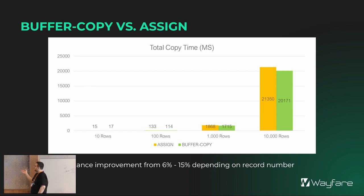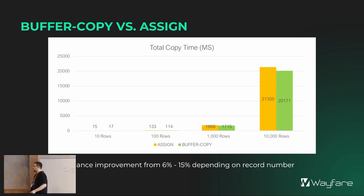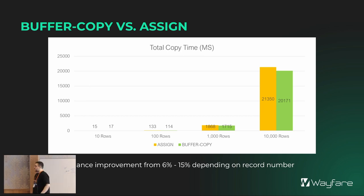Similarly for buffer copy versus assign: buffer copy is just faster, depending on the number of records and your temp tables or datasets, you're going to see a performance improvement of six to fifteen percent. If you've got temp tables with field names that don't match the database schema, just change those to match and you'll get the improvement.